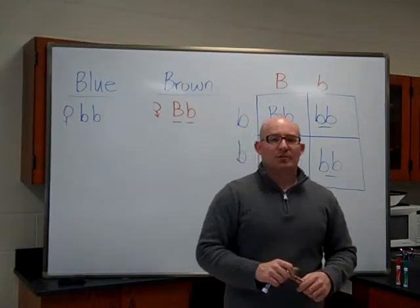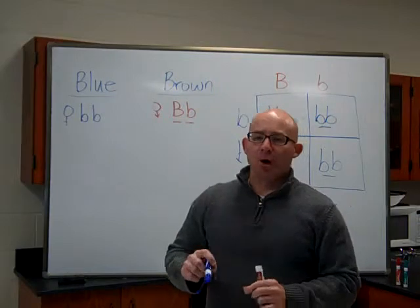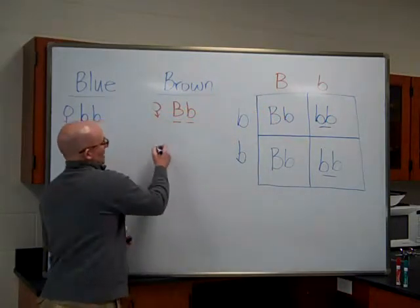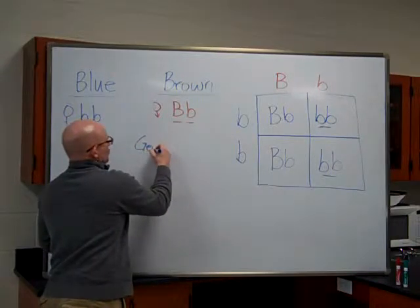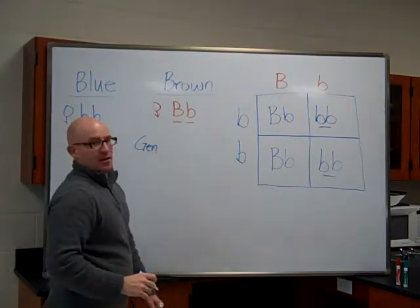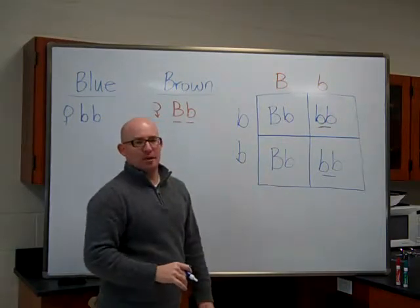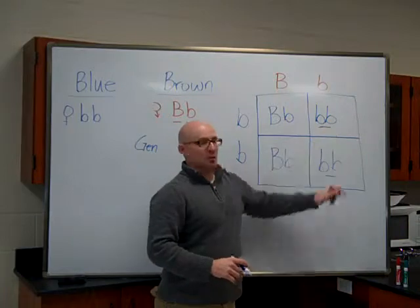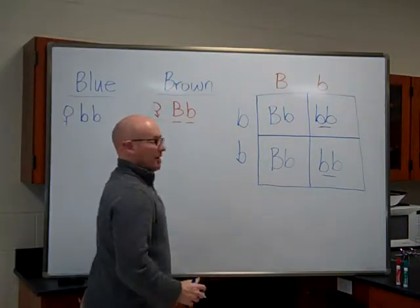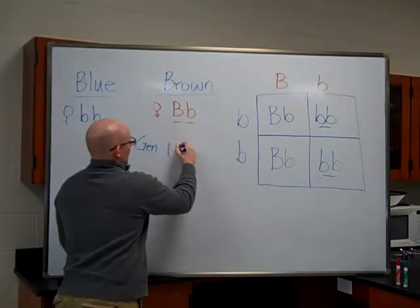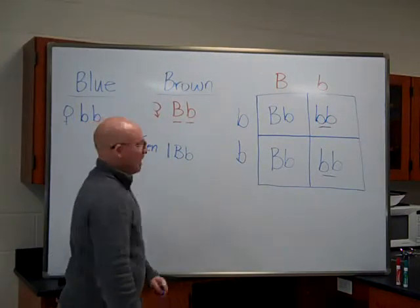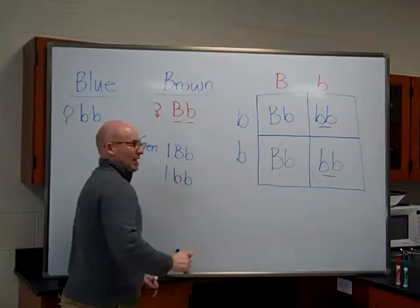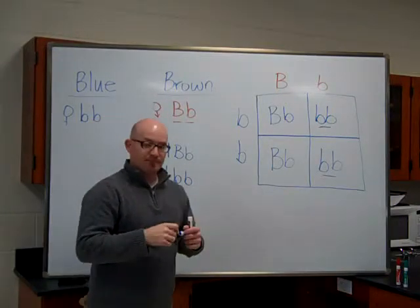We could ask another question. We could say, list the possible genotypes of the offspring. So if we said that, the possible genotypes of the offspring, we look at our Punnett Square. What possible genotypes do we have? Well, only big B, little b, and little b, little b, in a one-to-one ratio. So for every one big B, little b offspring I have, I would expect to also have one blue eyed, little b, little b offspring.